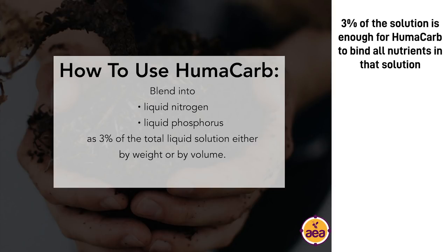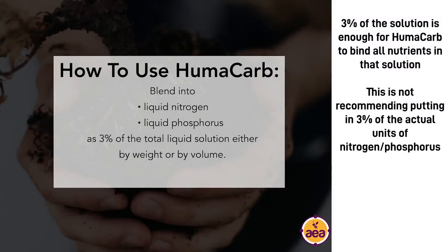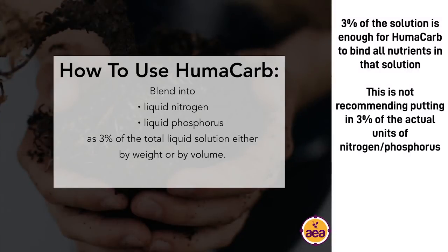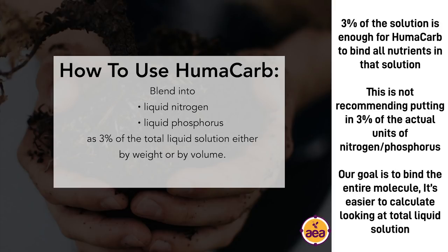This is an important point: we are not recommending 3% of the actual units of nitrogen or pounds of phosphorus — don't think of it that way. The nitrogen and phosphorus in the solution does not exist as the nitrogen atom or phosphorus atom; it's part of an entire molecule of nitrate, ammonium, phosphate, phosphite, polyphosphates, or orthophosphates. Our goal is to bind the entire compound — the entire molecule. It's much easier to calculate by looking at the total liquid solution rather than the units of nutrients being applied.